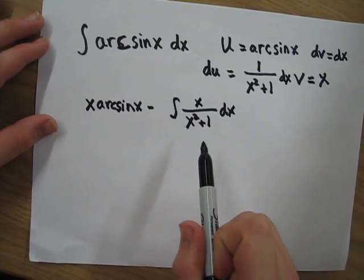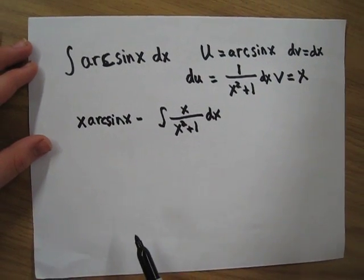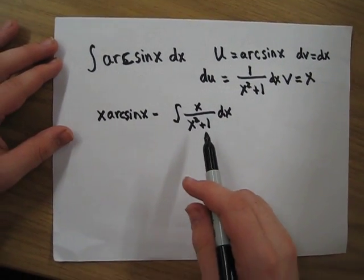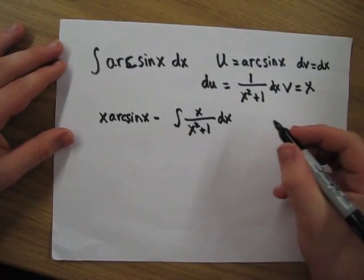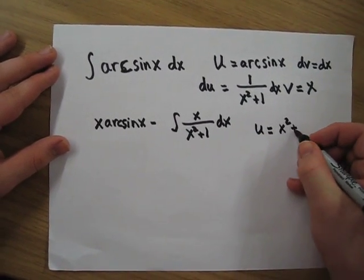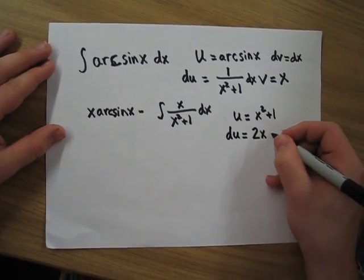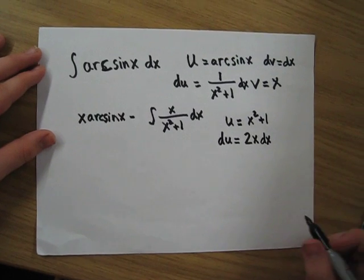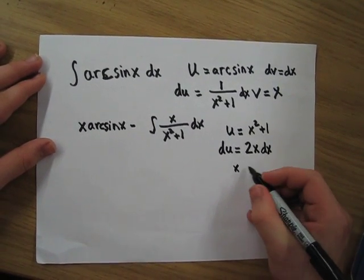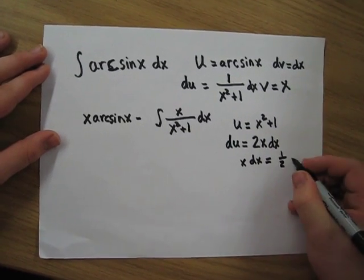Notice that we can use the reverse chain rule to solve this integral. We don't have to do integration by parts again. We can do that by setting u equal to x squared plus 1. Then we have du equals 2x dx, so x dx equals 1 half du.